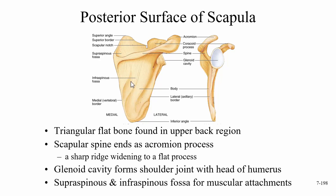When it comes time to learn the muscles, the naming becomes easy. The supraspinatus muscle sits in the supraspinous fossa, and the infraspinatus muscle sits in the infraspinous fossa. You've heard of the rotator cuff — it has four muscles, and these are two of them: the supraspinatus and infraspinatus.